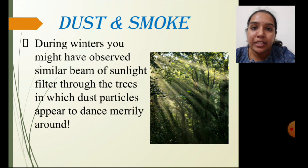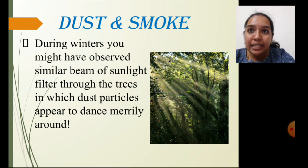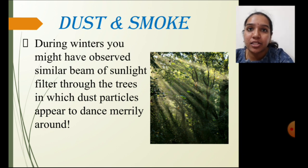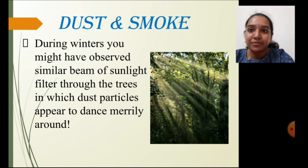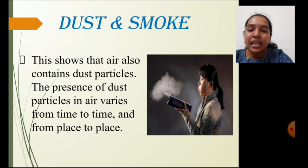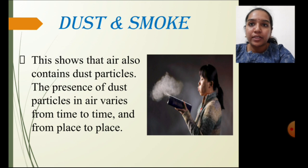Even in winter season we see a similar sunlight beam falling on earth through the trees, and even then you can see tiny dust particles along with the sun rays. This proves that dust particles move along with the beam of sunlight in earth's atmosphere, showing that air contains dust particles that are present everywhere along with the air.